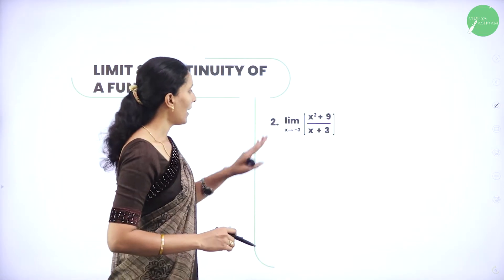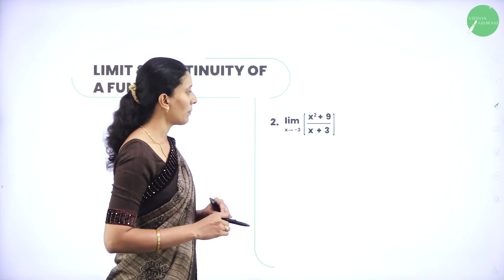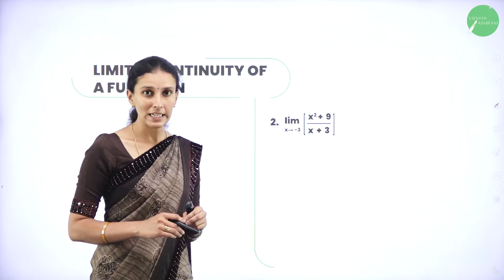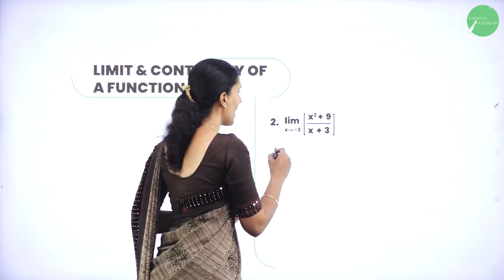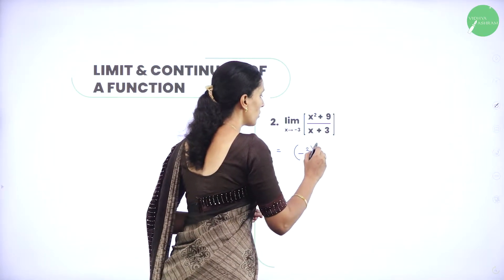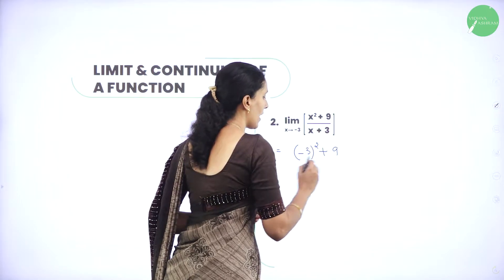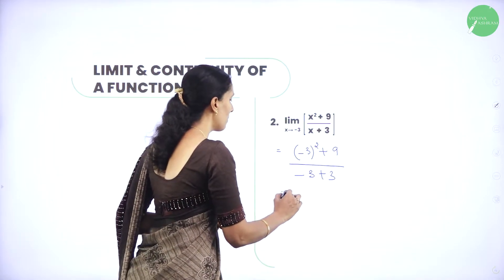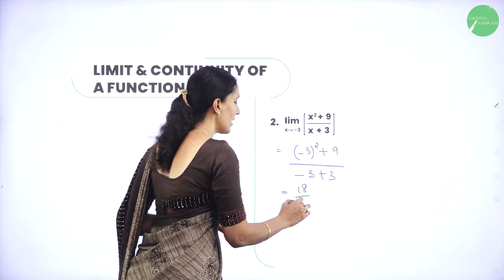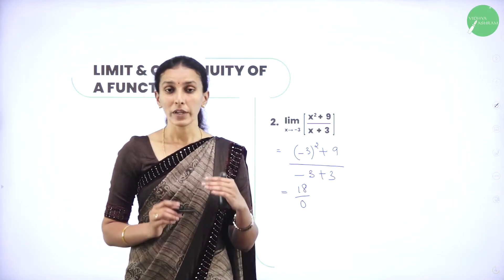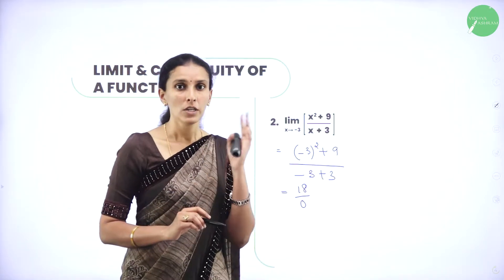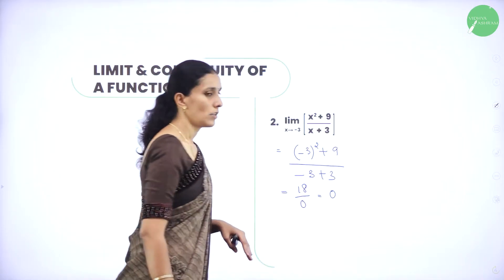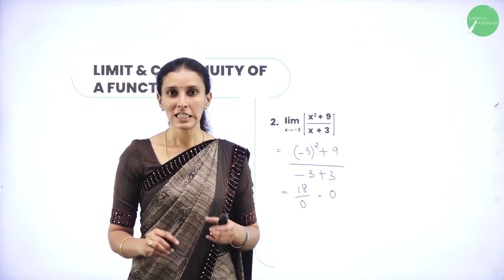Next question: apply the limit for the function x square plus 9 divided by x plus 3 as x tends to minus 3. Substituting minus 3 gives minus 3 whole square plus 9 divided by minus 3 plus 3, which is 18 divided by 0. Anything divided by 0 is a meaningful form, so the value of this limit is 0.